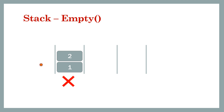In the first case the stack has two elements and is not empty; in the second it's empty. It should return true or false depending on this. You can track a size counter — start with size 0, increment whenever you push a new element, decrement whenever you pop, and when size is 0 the stack is empty, otherwise it's non-empty.